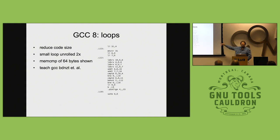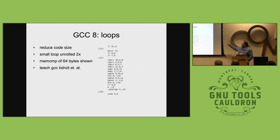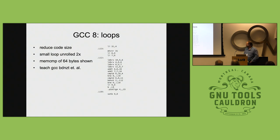I had to teach GCC about the PowerPC branch-decrement-not-zero combined with a comparison bit — it's a branch that tests two things at once: after the decrement, was it zero or not, and also check this condition bit. The loop is unrolled by two, so there are four loads and two sets of compares, and the second comparison is combined with the loop test.